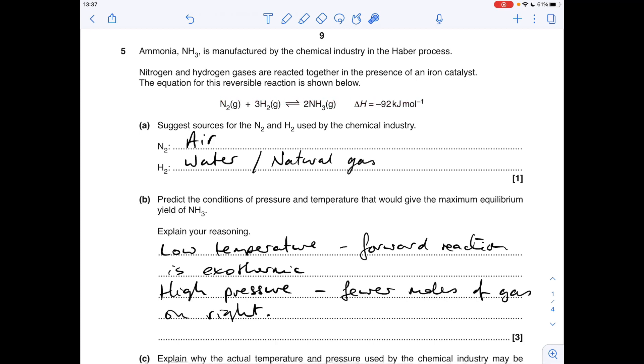If we look at temperature first, it's all based on the sign of the enthalpy change for the forward reaction. Because the forward reaction is exothermic, we can tell from the minus sign, that means a low temperature will favour that reaction. So low temperature, forward reaction is exothermic.